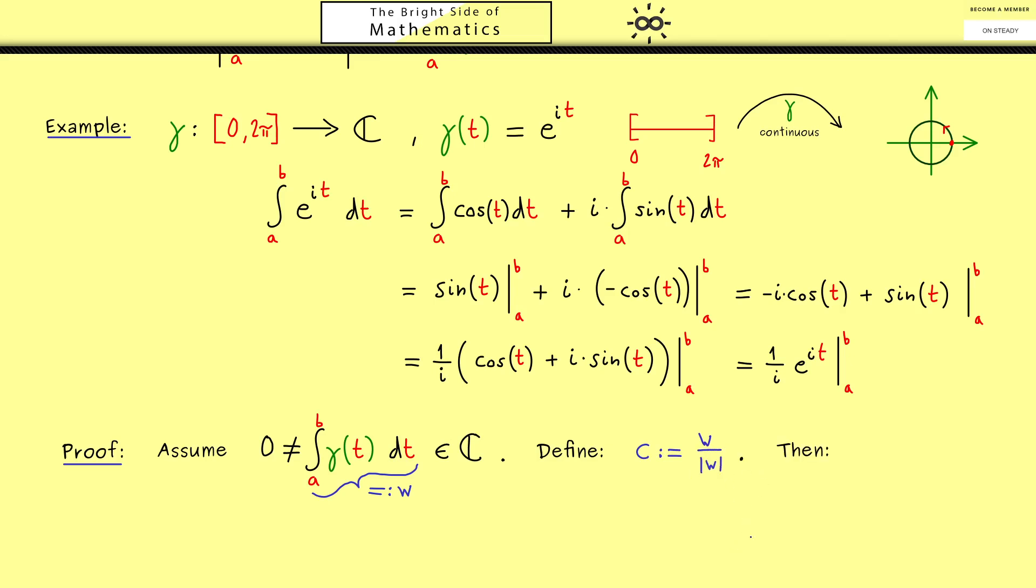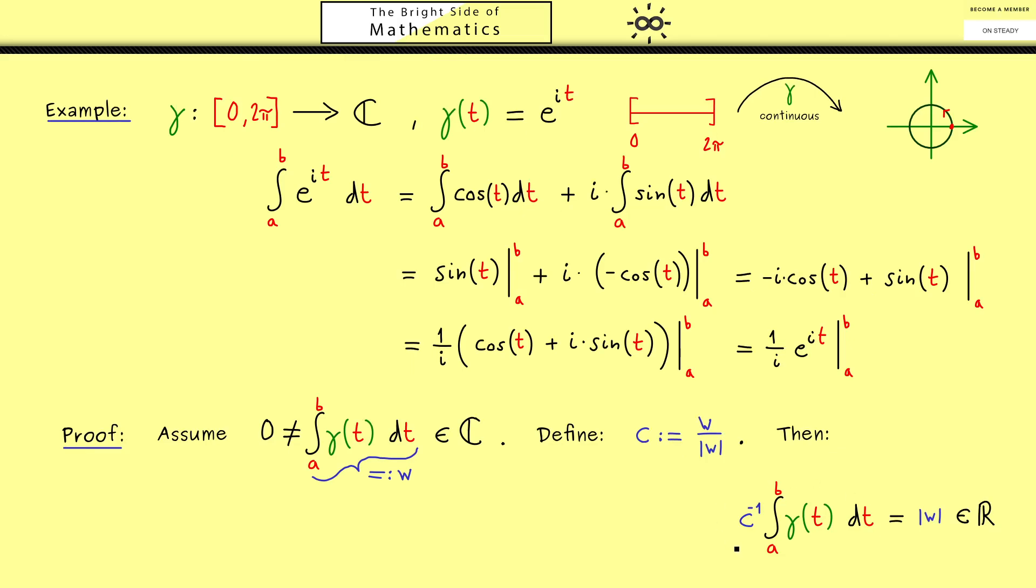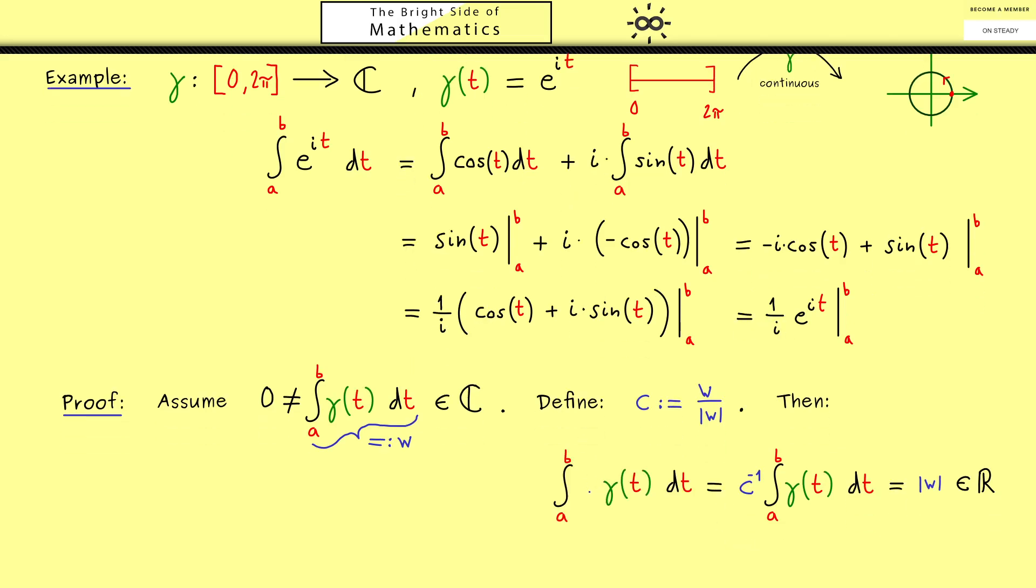Then we are able to multiply c inverse with the integral and get a real number. Simply because this is then the absolute value of w so on the real number line. Then here on the left hand side we can manipulate the integral. For example by linearity we can pull c inverse into the integral.